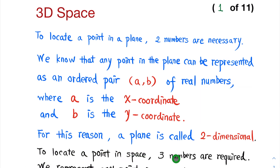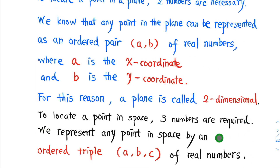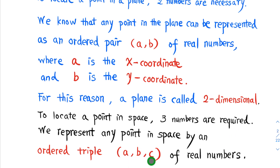To locate a point in space, three numbers are required. We represent any point in space by an ordered triple (A, B, C), where A, B, C are real numbers.